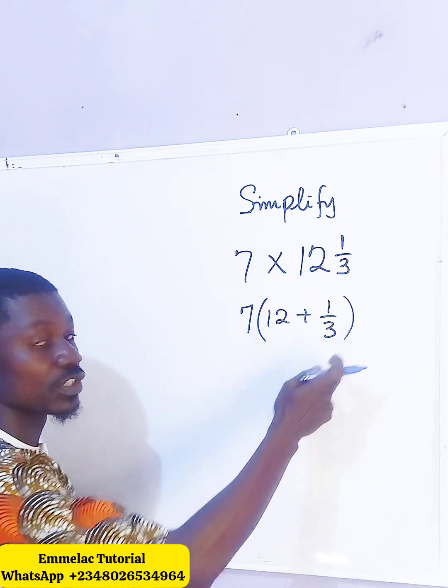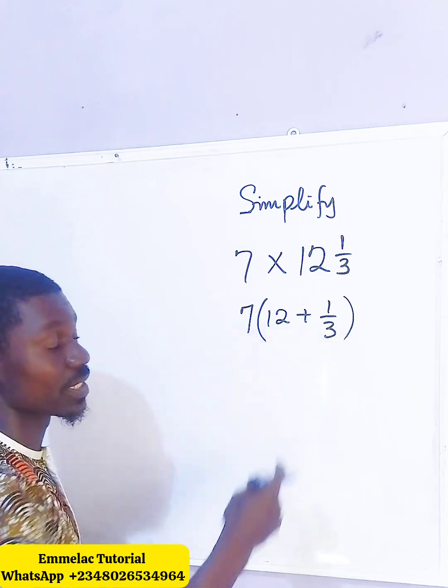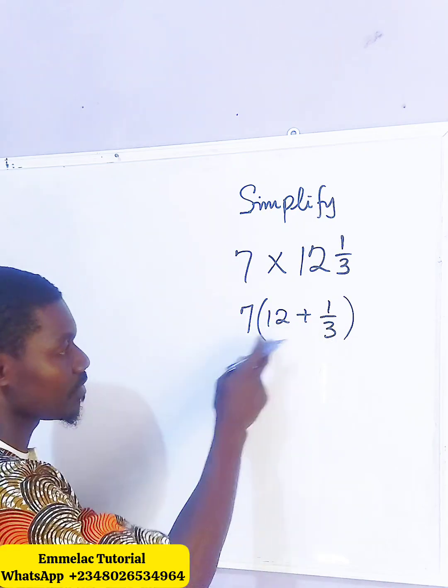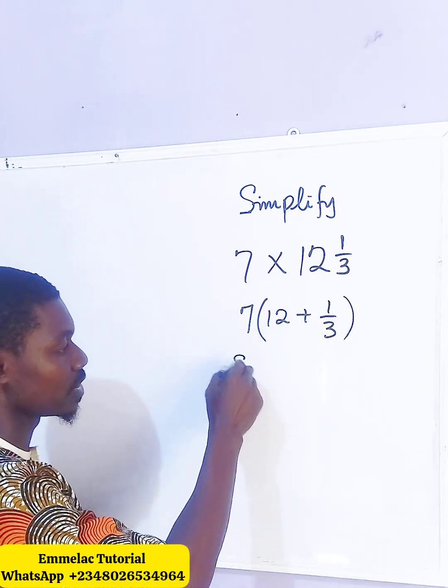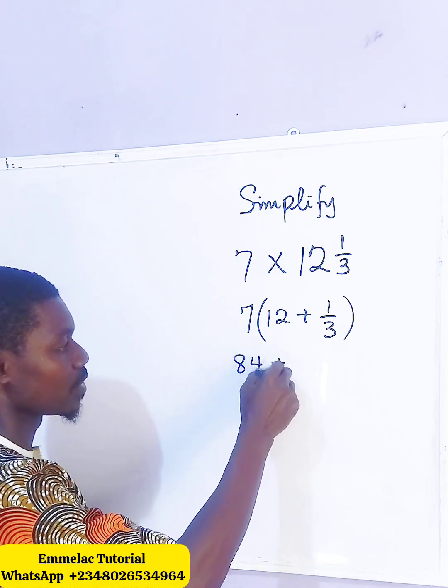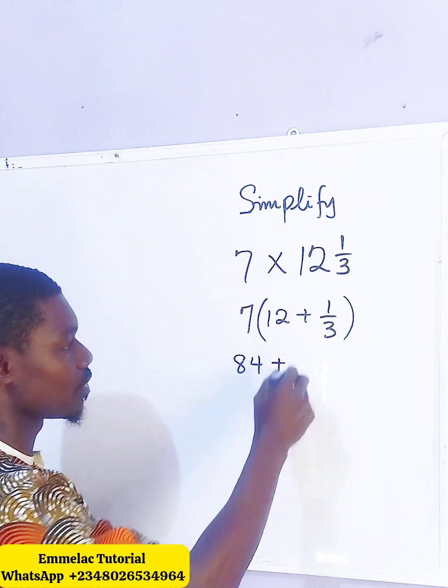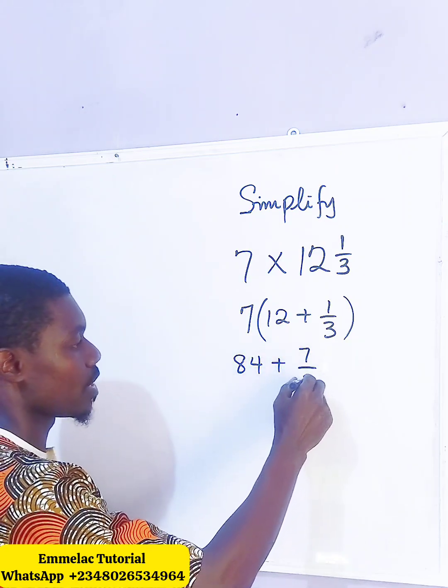Now we distribute 7 to the terms in the parentheses, so 7 times 12 gives us 84, plus 7 times 1 to give us 7 all over 3.